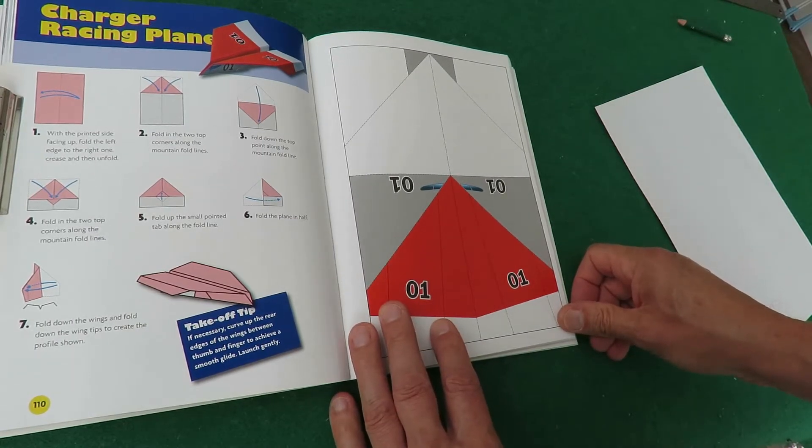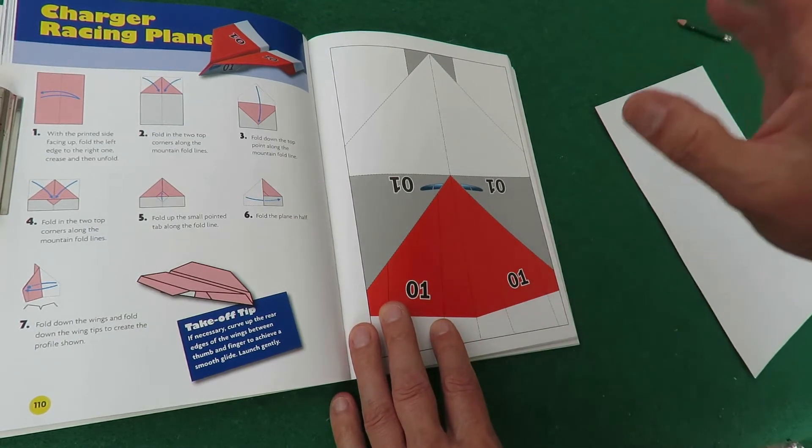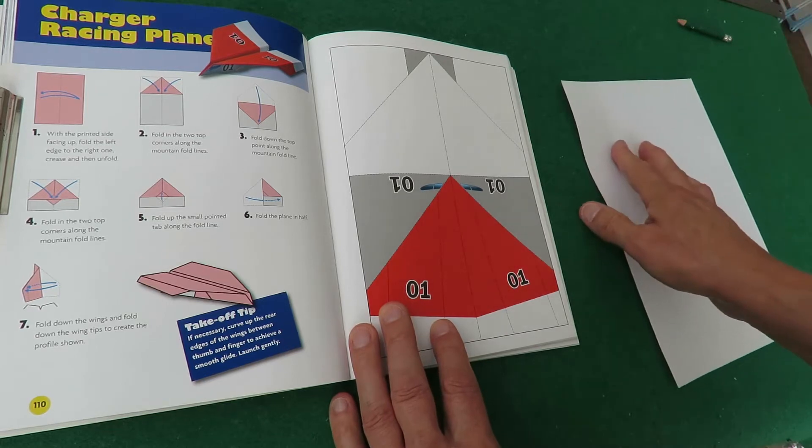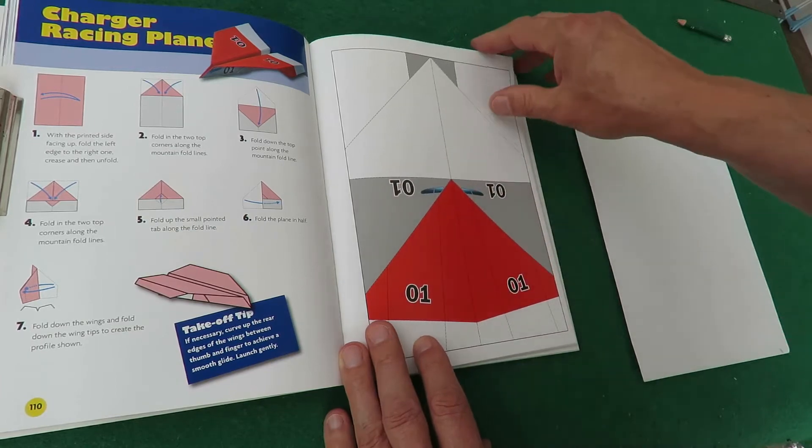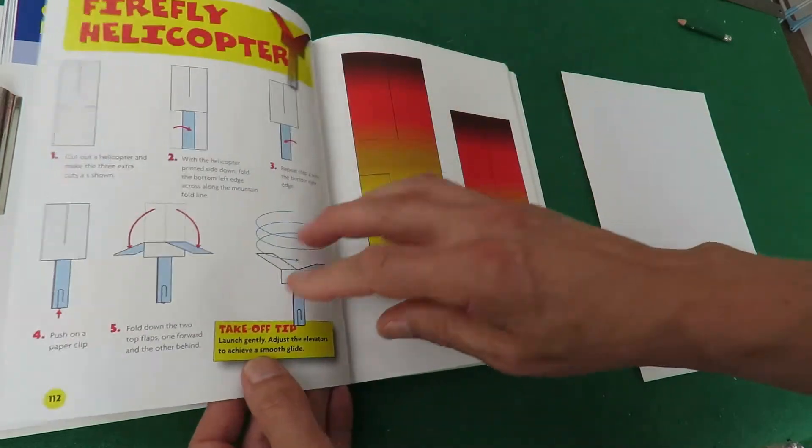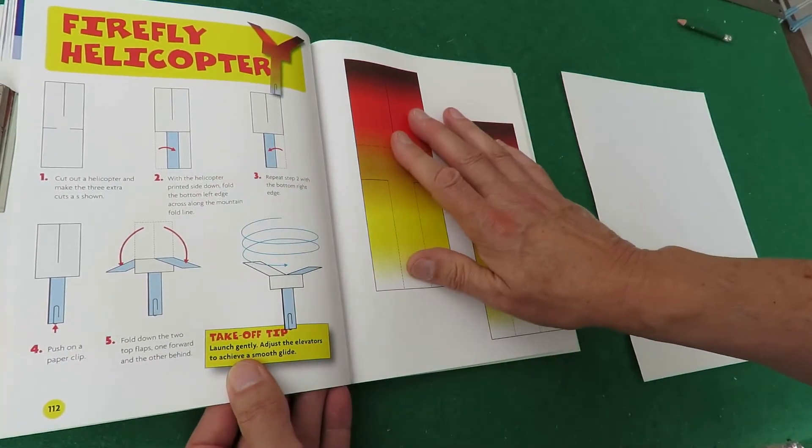Right, so what are we going to do? We're going to use a piece of paper rather than rip the page out. You can rip the page out and follow the fold instructions, but if you do that then you've pinched the instructions from the next page.